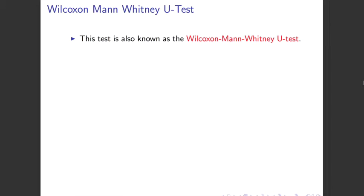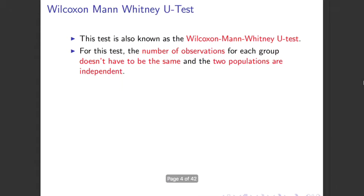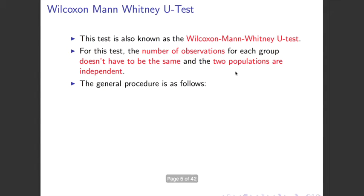The Mann-Whitney U-test applies to samples from two populations that are independent. The number of observations for each group does not have to be the same. It is important to remember that the two populations are independent and not paired, whereas in the previous lecture those observations were paired.